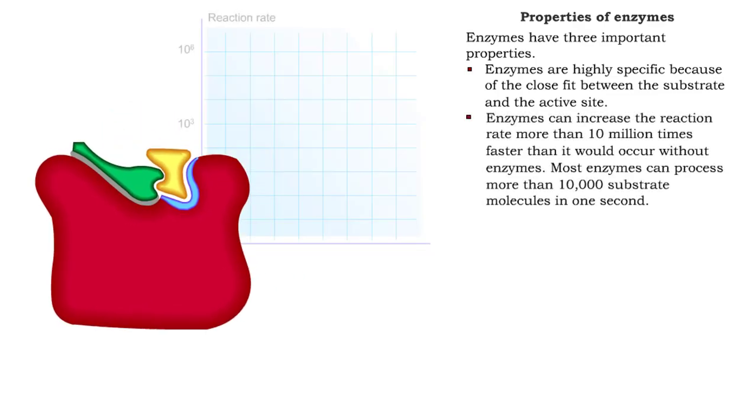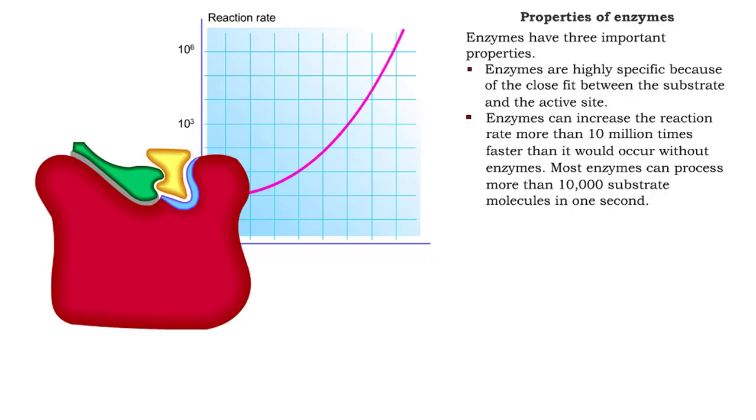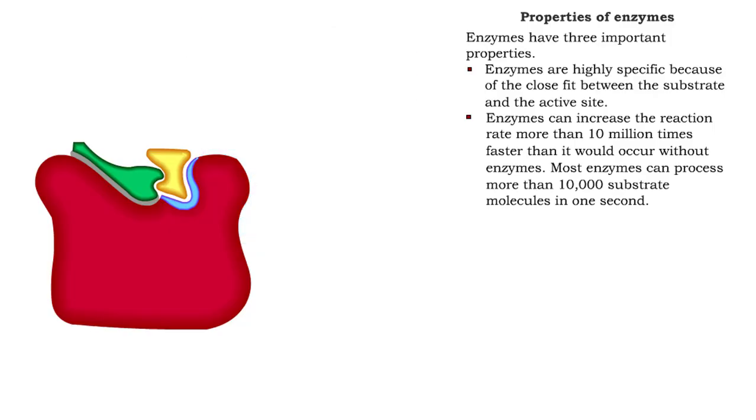Second, enzymes are also very efficient. They can catalyze reactions at a rate more than 10 million times faster than would occur without enzymes. A single enzyme molecule can process more than 10,000 substrate molecules in one second.